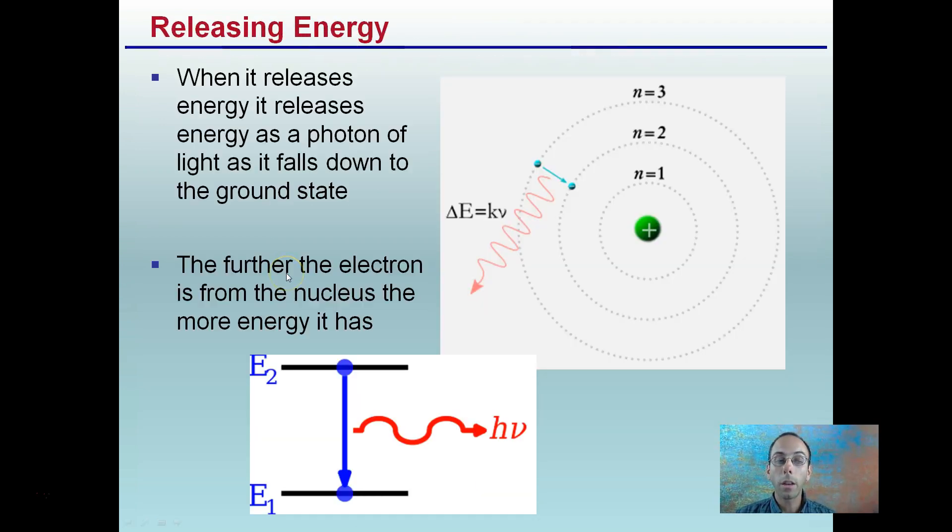When the electron releases energy, that energy will be released as it jumps down a level as a photon, and it falls down closer to the ground state. The further the electron is from the nucleus, the more energy it has. We'll see that example here where that same electron is now losing energy. Here it's given up as a photon of light, which we can see.